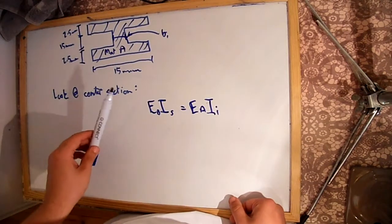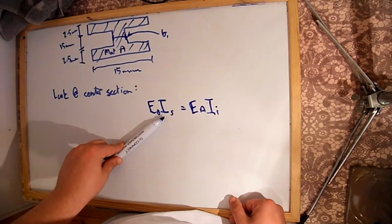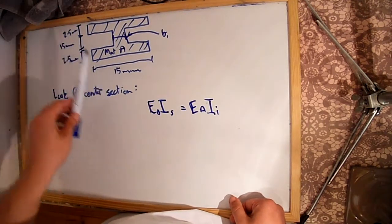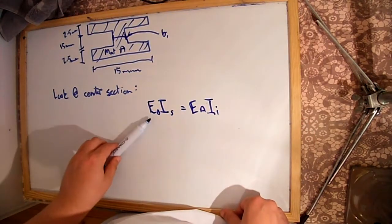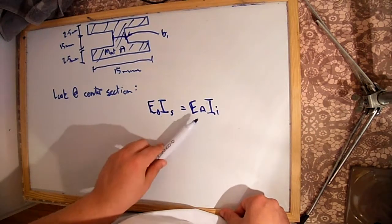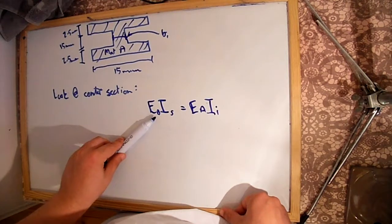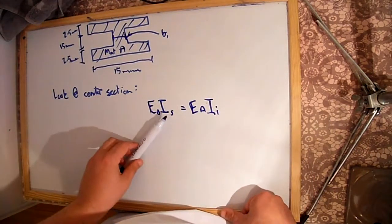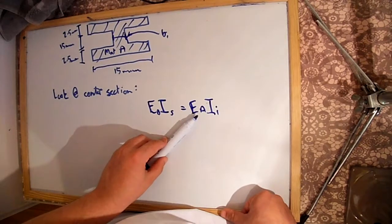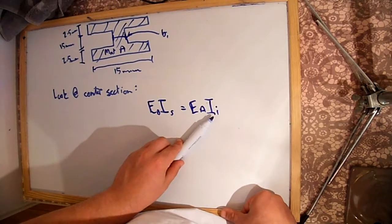The formula for flexural stiffness is Young's modulus multiplied by the second moment of inertia. For the centre section to have the same flexural modulus before and after, the product E times I must be equal. So the Young's modulus of material B multiplied by the second moment of inertia of the solid equals the Young's modulus of material A multiplied by the second moment of inertia of the centre section of the I-beam.